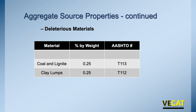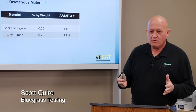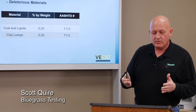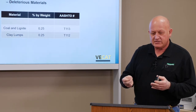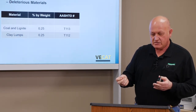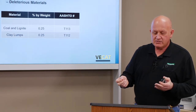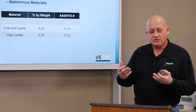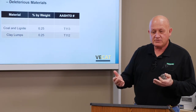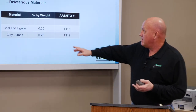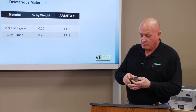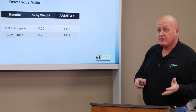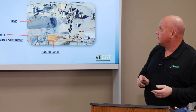For deleterious materials, we also look at clay lumps using AASHTO T112. Aggregate samples are allowed to soak overnight — 24 hours in water. At the end of the soaking cycle, the material is taken out and tested by hand to see if it degrades; if it does, it's determined to be a friable particle. The difference between particles that degrade and those that don't allows us to determine the percentage of clay lumps. The maximum loss by weight is 0.25%, which summarizes the source properties.